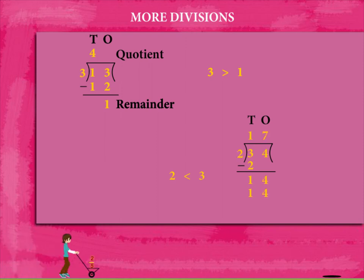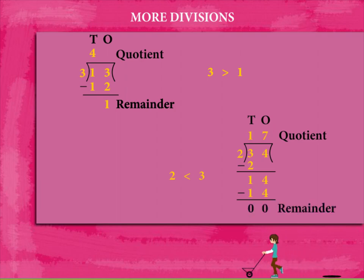2 times 7 is 14. Write this below and subtract to get 0. In this case, the quotient is 17 and remainder 0.